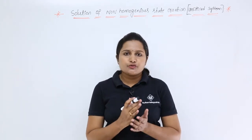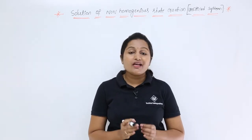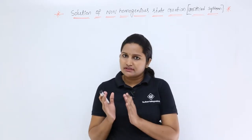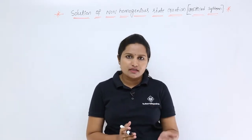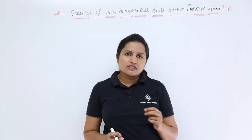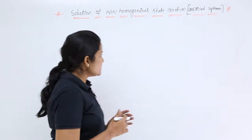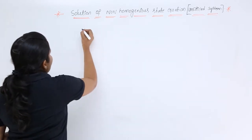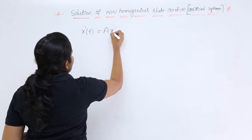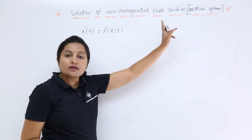In this video we are going to discuss the solution for a non-homogeneous state equation of an unforced system. In the earlier class we discussed the same solution for a forced system. The difference between a forced system and an unforced system lies in the state equation. The state equation of an unforced system is x_dot(t) = A·x(t).